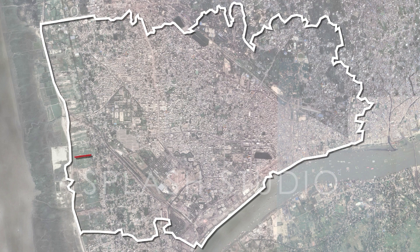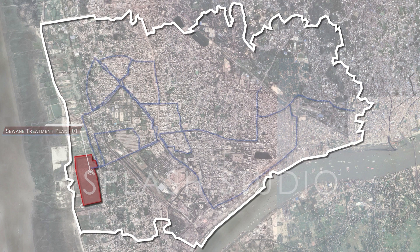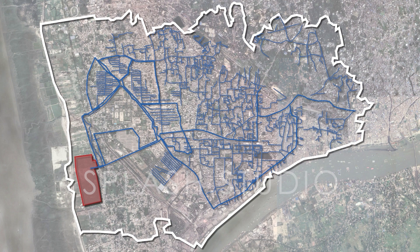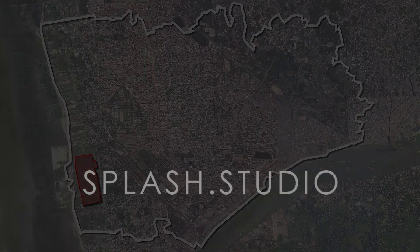The sewerage treatment plant will be located in the southwestern part of the catchment. Here are the trunk sewers and riser sewers, which are the main pipelines of this network.